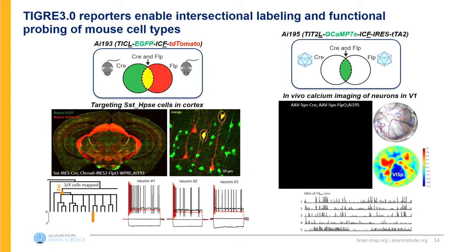In order to study the function of Hpc cells or other cells at the intersection of two genes, we need to develop new reporters with functional tools. We've been working to build new AND-design reporters — so only at the intersection of Cre and FlpO is a functional tool expressed. For line AI-195, it expresses GCAMP-7S at the intersection of Cre and FlpO using a viral transgenic approach where we've introduced viruses into AI-195 to broadly label neurons. We see nice expression in calcium imaging within primary visual cortex.